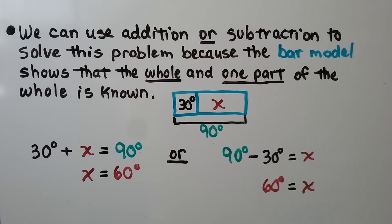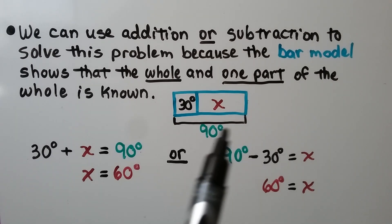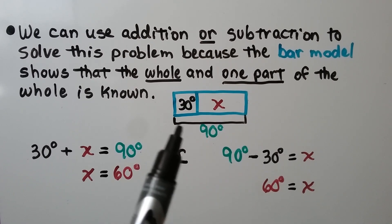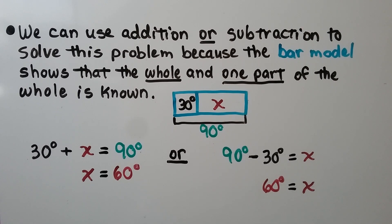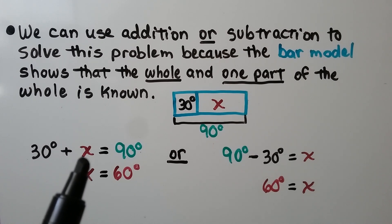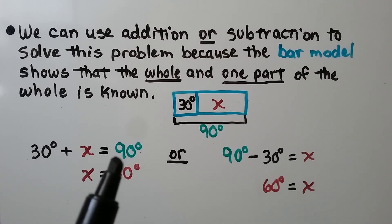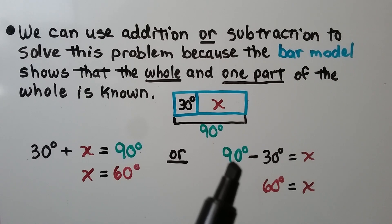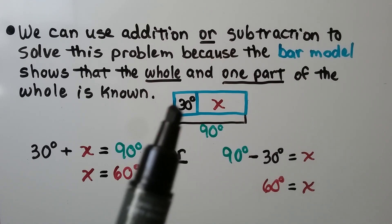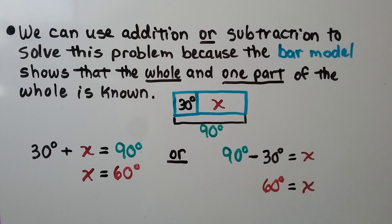We can use addition or subtraction to solve this problem because the bar model shows that the whole, 90 degrees, and one part, 30 degrees, are known. So we can use 30 degrees plus the unknown amount x equals 90 degrees, or 90 degrees minus 30 degrees equals x, which is 60 degrees. They're inverse operations, so we could use one to check the other.